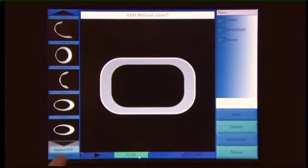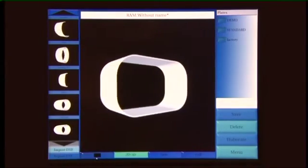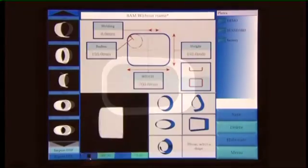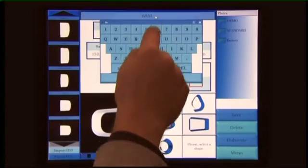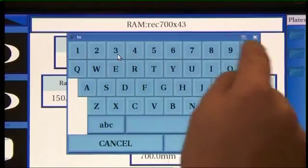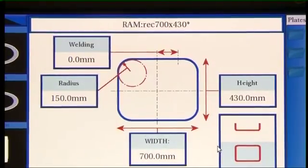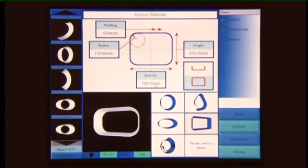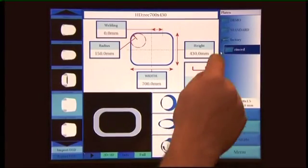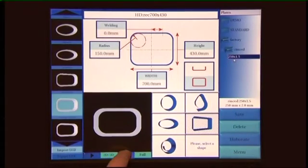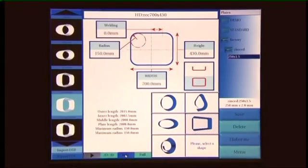It's possible to display the three-dimensional rendering of the shape. Let's give a name to the shape and save it. Let's select the plate we want to use for our tank and read in the info area the minimum and maximum radiuses of the shape and the length of the plate to cut.